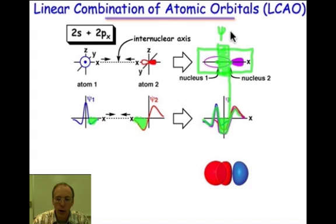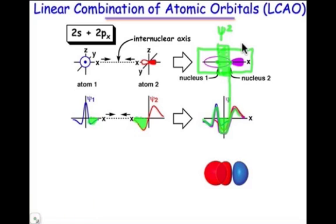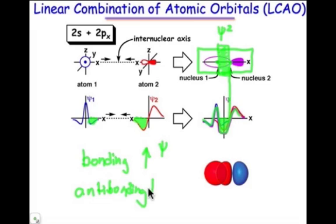When we square that, there's an increase in the electron density in that region. So bonding contributions have an increase in the wave function psi, and antibonding contributions have a decrease in the wave function psi. That's what we're going to be looking for in the process of LCAO.